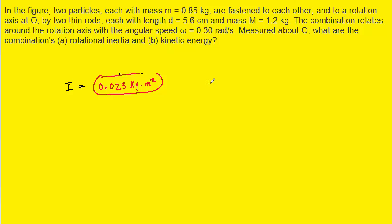Fortunately, Part B is much easier. It's asking us for the kinetic energy of this rotating system. We know that the kinetic energy for a rotating system is equal to 1/2 times its rotational inertia times its angular speed squared.